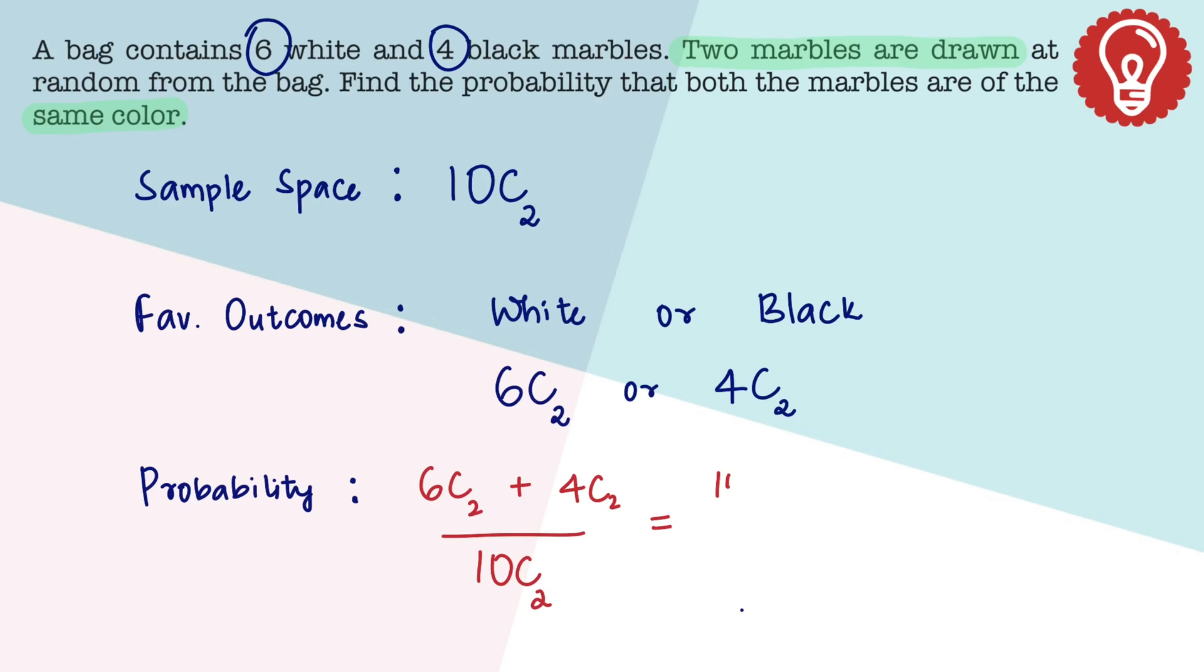On expanding these, 6C2 is 15, 4C2 is 6, and 10C2 is 45. That becomes 21 by 45. And let's strike this off with three sevens and three fifteens. So we get 7 by 15. And that is the answer.